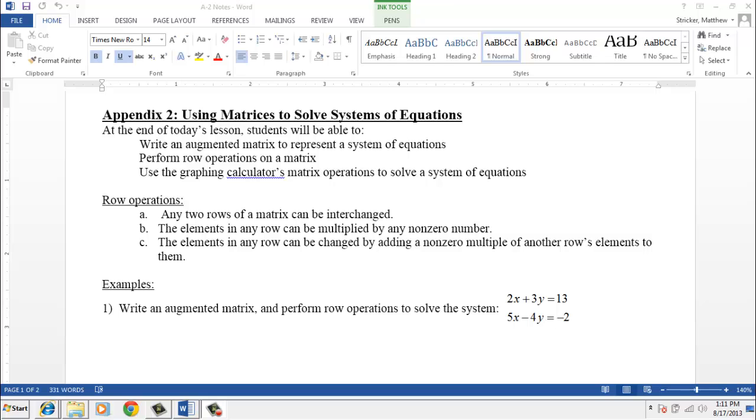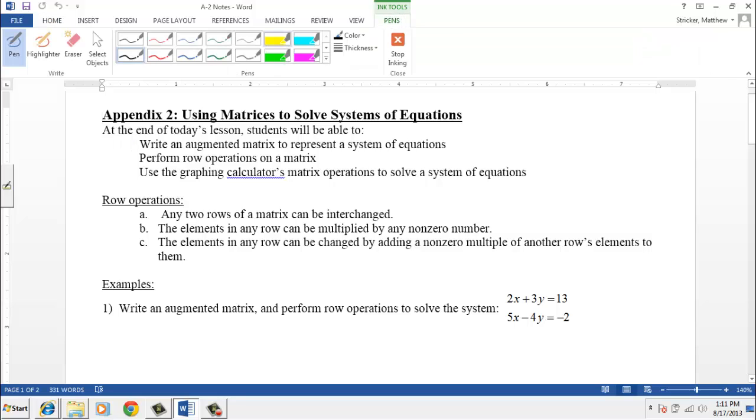The way it works is kind of the same as the elimination and substitution method, but we call the steps row operations. There's really three main types of row operations. The first type is that any two rows of a matrix can be interchanged. The second type is that elements of any row can be multiplied by a non-zero number. And the third thing is any element in any row can be changed by adding non-zero multiples to another row's elements.